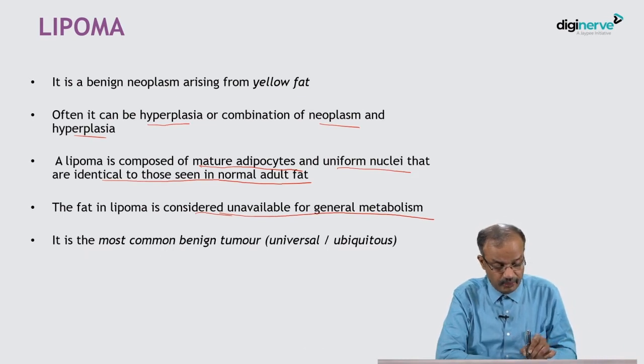It is the most common benign tumor in the body, that is why it is called the universal tumor or ubiquitous tumor. So if somebody asks what is the universal tumor, your answer should be lipoma. You must know about lipoma — in theory, in clinical practice, and in examinations.